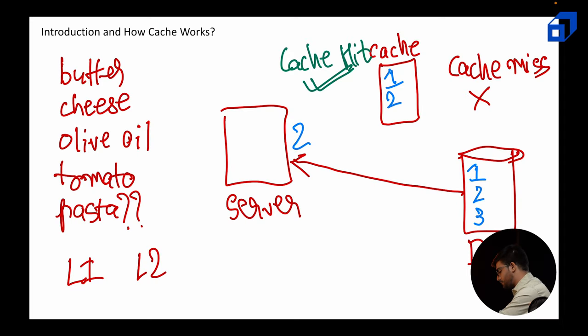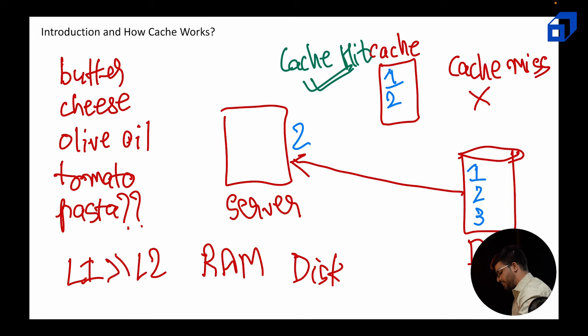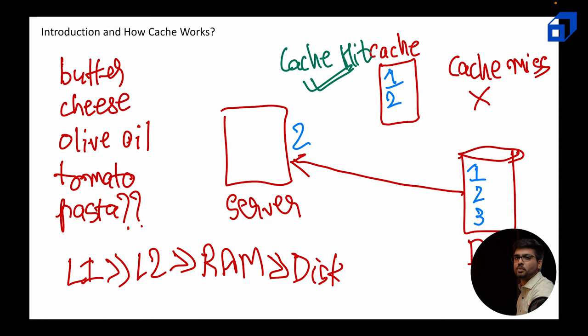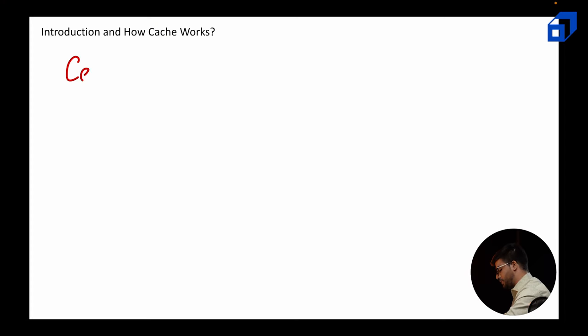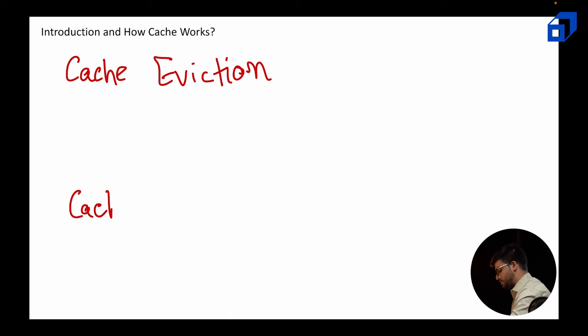After L2 comes memory, and from memory it goes to the database. The hierarchy is: L1, L2, memory, then disk or database. L1 is much faster and much more costly, and that is the reason we have those storage constraints in cache and cannot store everything. Now let me talk about some definitions you'll hear in this video. One is cache eviction — I'm going to explain all cache eviction policies — and the other is cache invalidation.